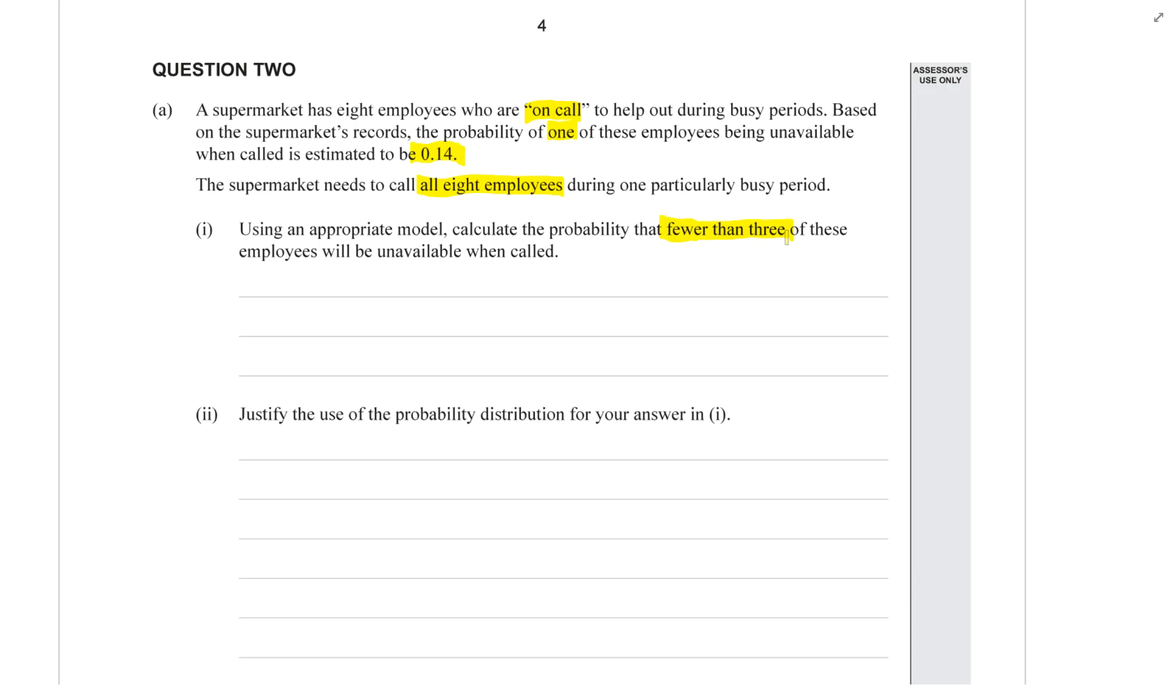First thing we need to ask is, is our variable discrete, that means counting, or continuous, which means measuring. What is the variable of interest in this situation? What's the thing that we're counting or measuring?